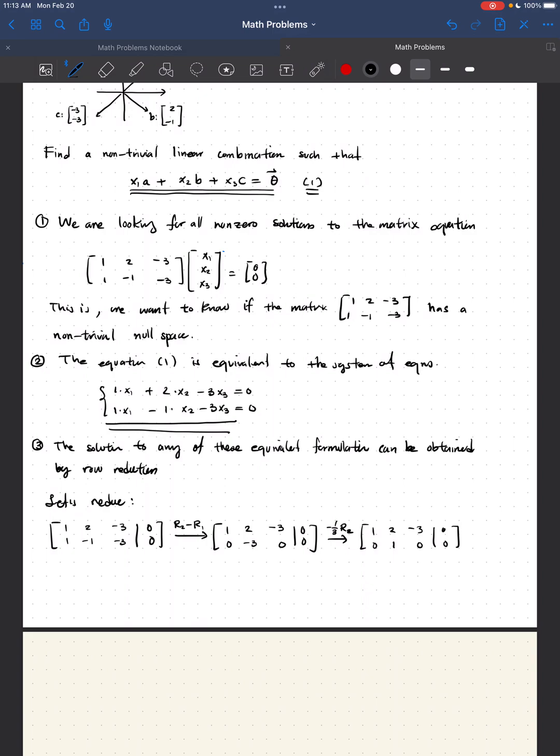Then, from here, one more operation, which is to row 1, we subtract twice row 2. And from that one, we get [1, 0; -3, 0; 1, 0], with [0, 0] in the last column. Okay.